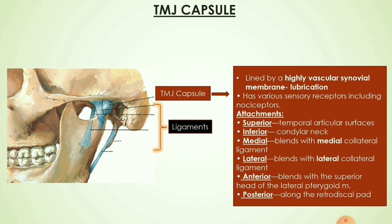The TMJ capsule encloses the entire temporomandibular joint. It is lined by a highly vascular synovial membrane which helps in lubrication of the joint. It has various sensory receptors including nociceptors. Superiorly it attaches to temporal articular surfaces, inferiorly to the condylar neck, medially it blends with the medial collateral ligament, laterally with the lateral collateral ligament, anteriorly with the superior head of the lateral pterygoid muscle, and posteriorly it runs along the retrodiscal pad.